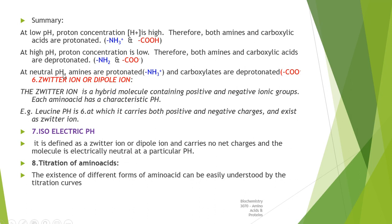Another concept called zwitterion or dipole ion. The zwitterion is a hybrid molecule containing positive and negative ion groups. Each amino acid has its own pH. For example, leucine pH is 6, at which it carries both positive and negative charges and exists as zwitterion.